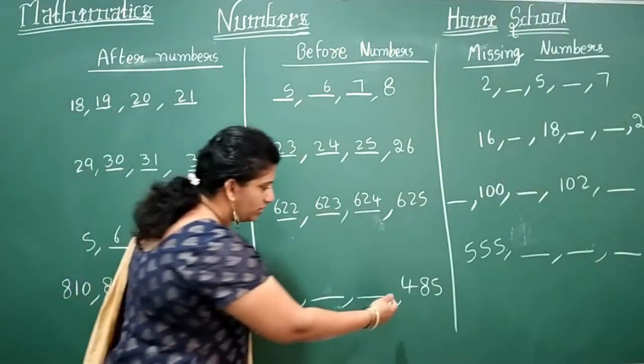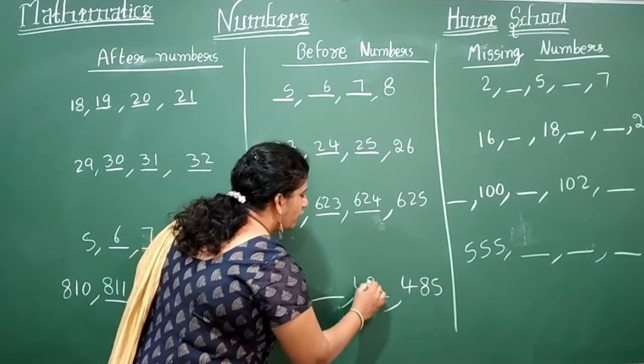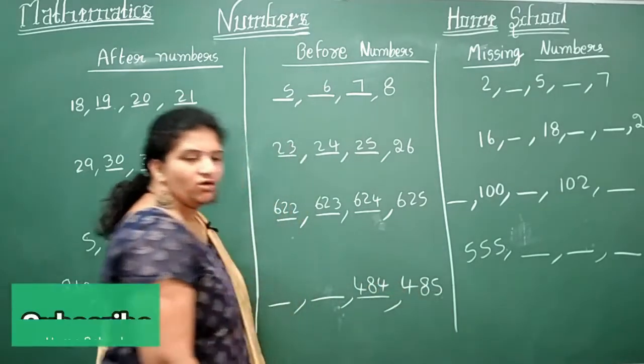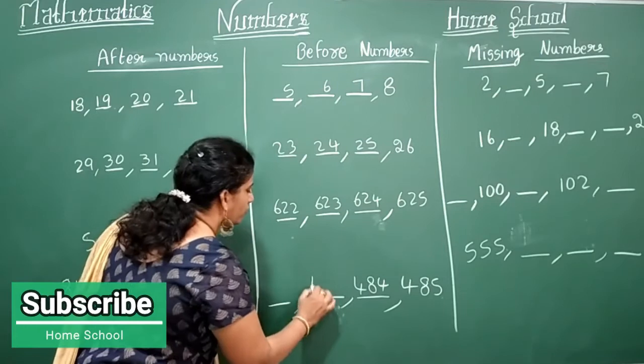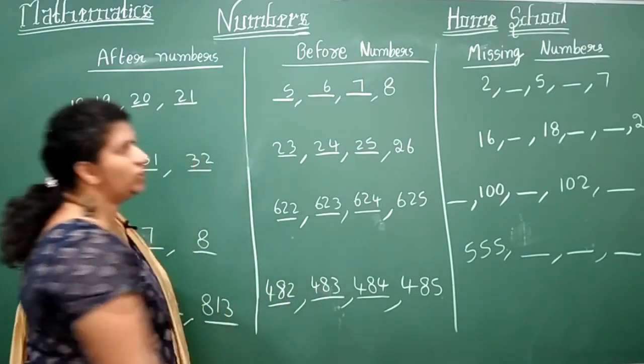Same manner. Go to the next example here. What is this? 485. 485, before what it counts: 484, 483, 482.